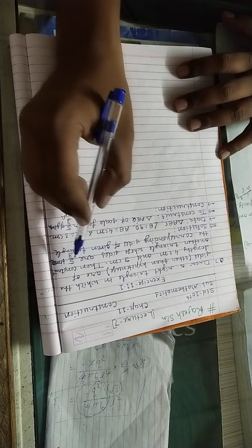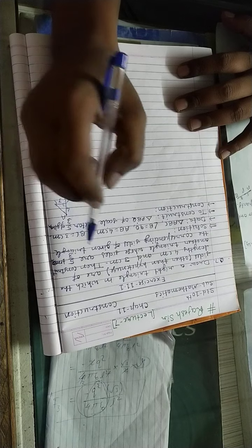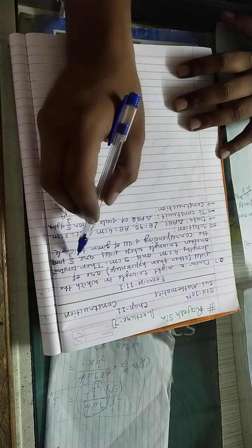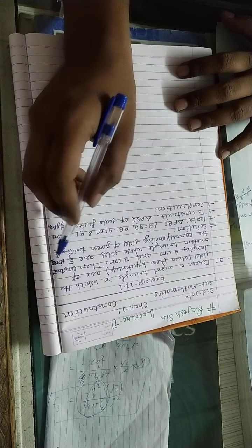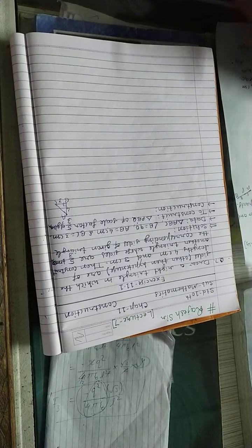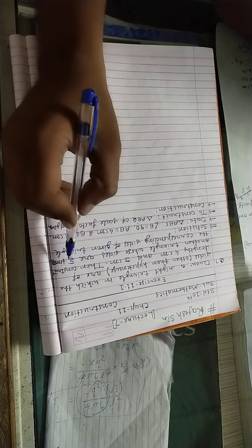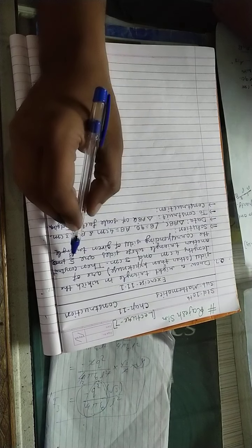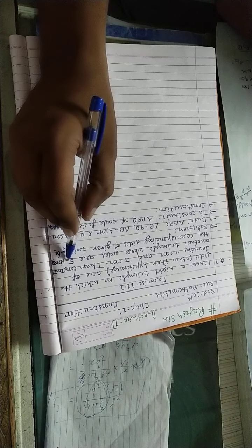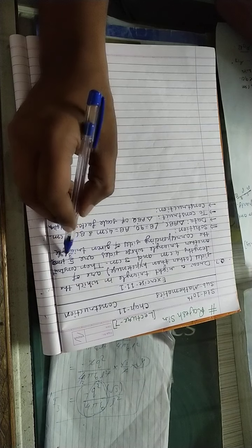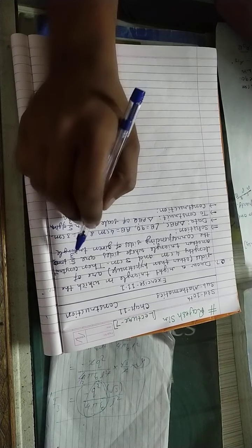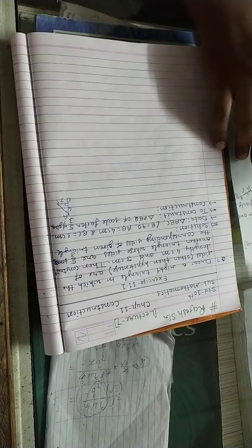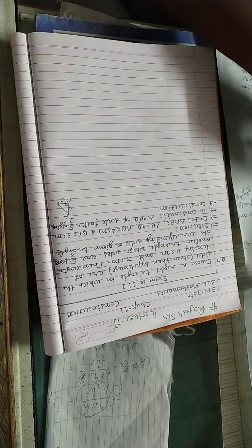Drawing the given triangle, we have to construct another triangle whose sides are 5/3 times the corresponding sides. The required triangle is bigger than the given triangle because the required triangle's ratio is 5 and the given triangle's ratio is 3. This is the scale factor given. So first we draw the given triangle.